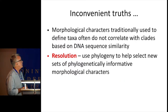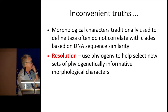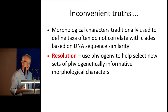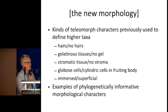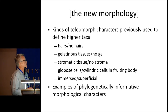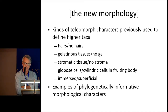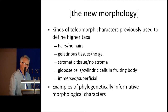The morphological characters that we've traditionally used often don't correlate with the clades based on DNA sequences. You can resolve this by using phylogeny to help select new sets of characters which are phylogenetically informative — not the characters you're used to using, but different ones that may be a little harder to observe but may actually mean something in a phylogenetic sense. So, the new morphology. I'll run through a brief example based on characters traditionally used to distinguish the teleomorph states of some Leotiomycetes. The traditionally used characters were ones that were easy to see and score — things like hairs or no hairs, gelatinous tissue or no gel, stroma or no stroma. The trouble is, they often don't correlate well with phylogenies.